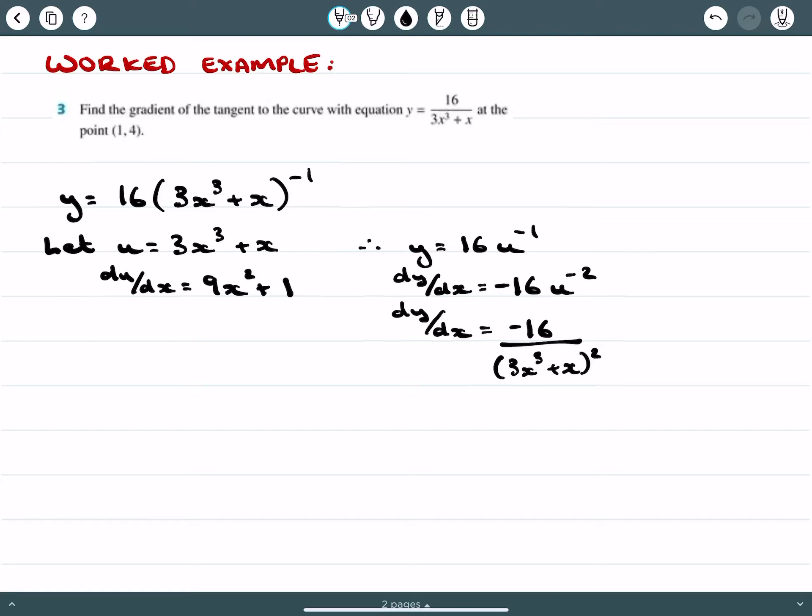Then dy/dx equals du/dx times dy/du. Sorry, this should be dy/du. I'm going to multiply these two expressions together, and I found my derivative function dy/dx equals negative 16 times 9x squared plus 1 over 3x cubed plus x all squared.